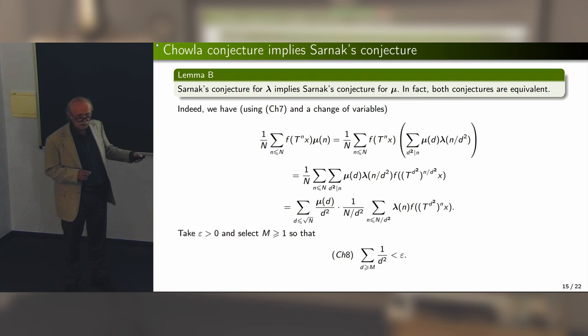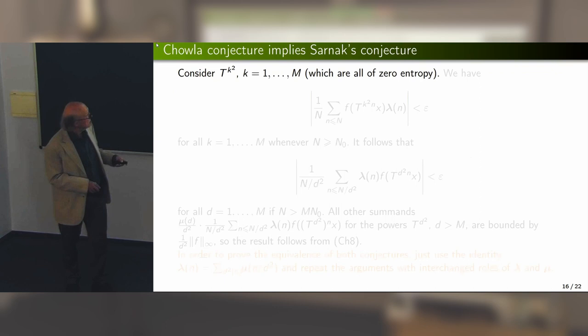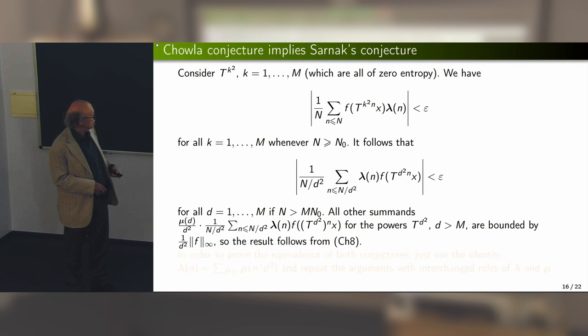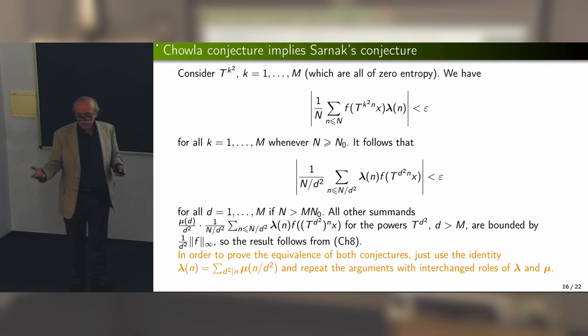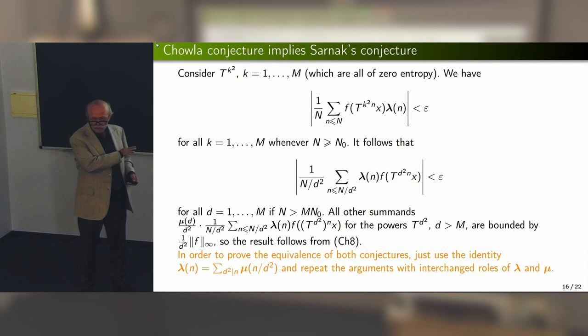For small d, each term goes to zero. For large d, fortunately the series converges. Putting these two facts together finishes the proof. In fact, Sarnak's conjecture for the Liouville function and the Möbius function are equivalent — it is the same story in the other direction using a different identity. Arithmetic proofs are also possible.